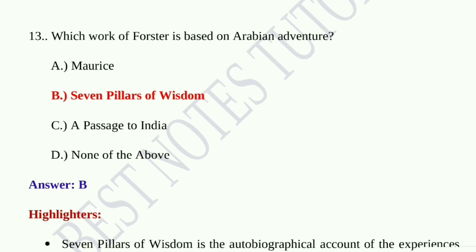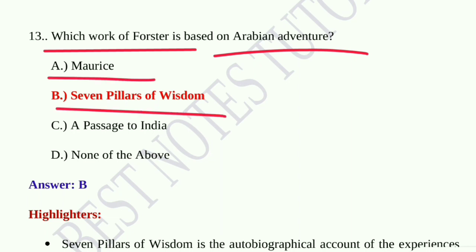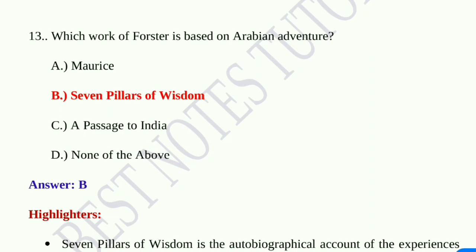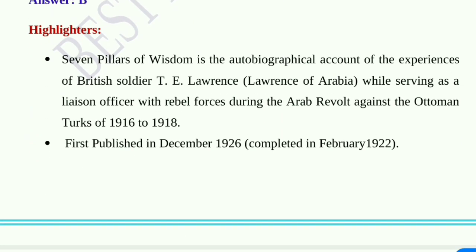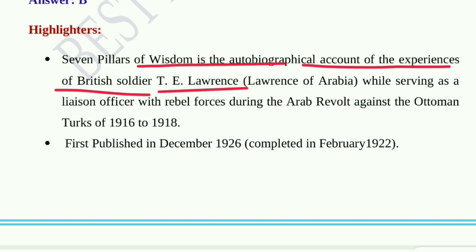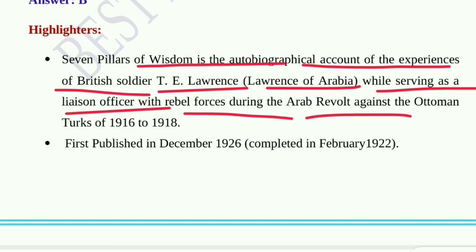Question number thirteen: Which work of Forster is based on Arabian adventure? Option A, Maurice; option B, Seven Pillars of Wisdom; option C, A Passage to India; option D, None of the above. Option B, Seven Pillars of Wisdom, is the correct answer. Seven Pillars of Wisdom is the autobiographical account of the experiences of British soldier T.E. Lawrence — Lawrence of Arabia — while serving as a liaison officer with rebel forces during the Arab Revolt against the Ottoman Turks in 1916 to 1918, first published in December 1926.